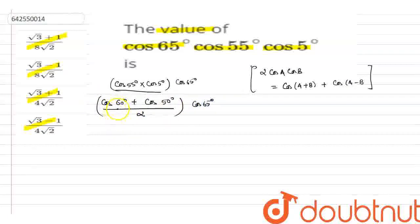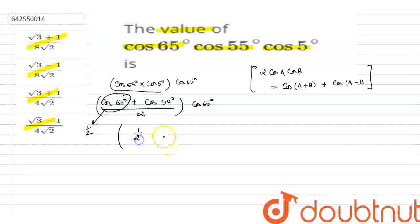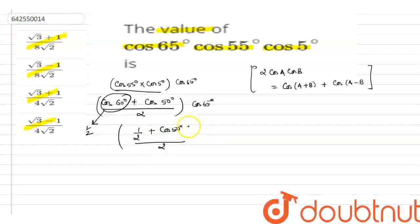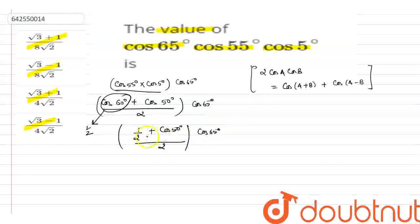Simplifying, since cos(60°) = 1/2, we substitute to get: (1/2 + cos(50°)) × cos(65°), all divided by 2.